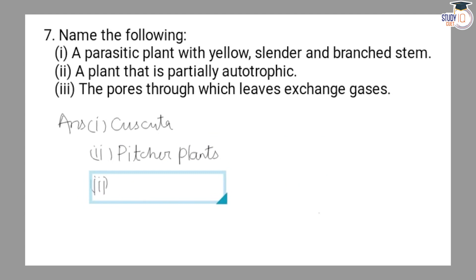the answer is stomata. Stomata are small pores on the leaves through which gases are exchanged. Carbon dioxide enters and oxygen is released.